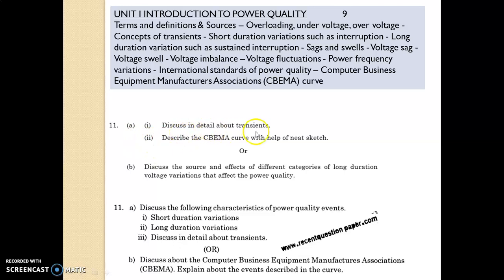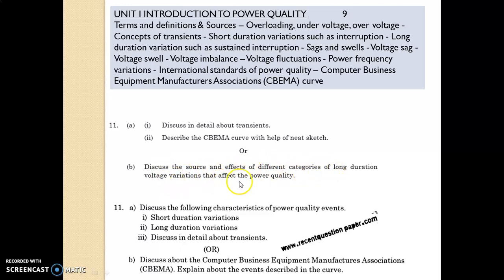The questions include: discuss in detail about transients; describe the CBEMA curve — Computer Business Equipment Manufacturers Association — with the help of a neat sketch; discuss the sources and effects of different categories of long duration voltage variations that affect power quality; and discuss the characteristics of power quality events such as short duration variations and long duration variations.